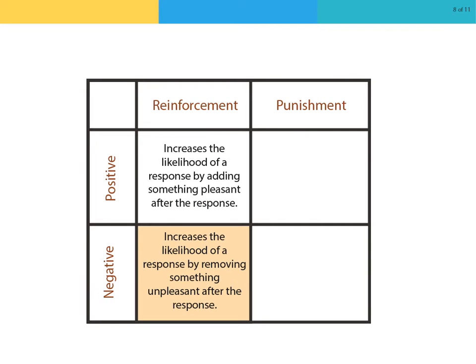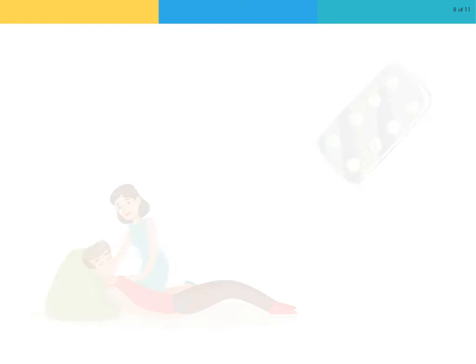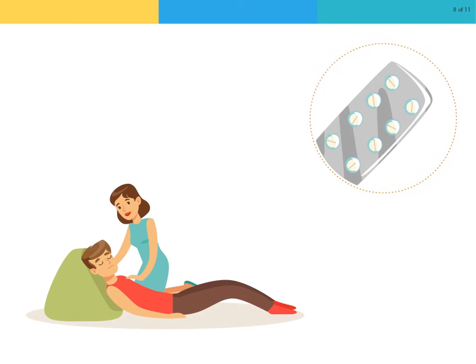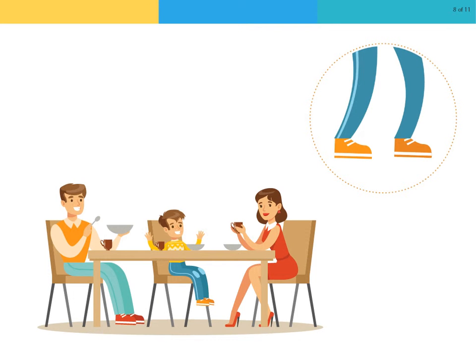Conversely, negative reinforcement increases the likelihood of a response by removing something unpleasant after the response. Examples include: a man taking an aspirin to take away the pain from his headache, a woman entering a code that turns off a loud alarm, and a young boy being allowed to leave the dinner table after he eats his vegetables.